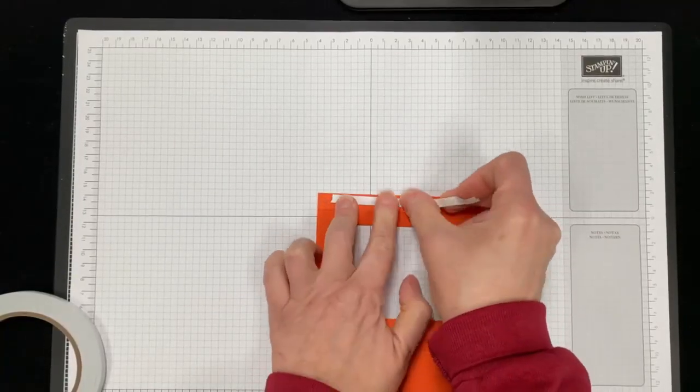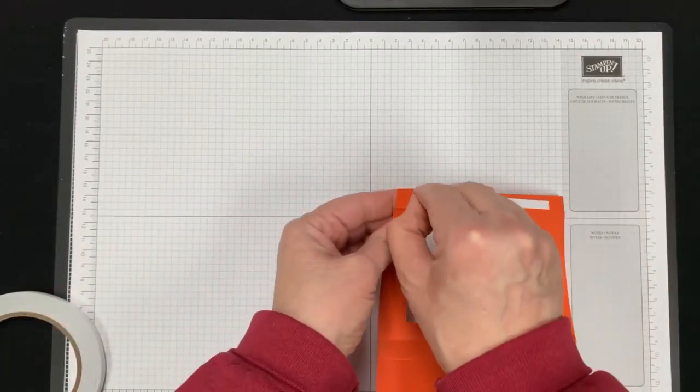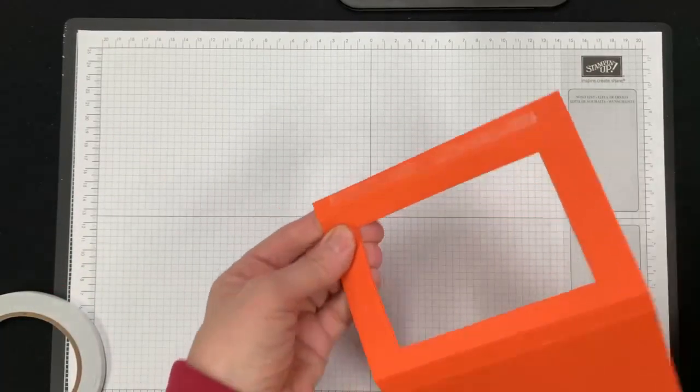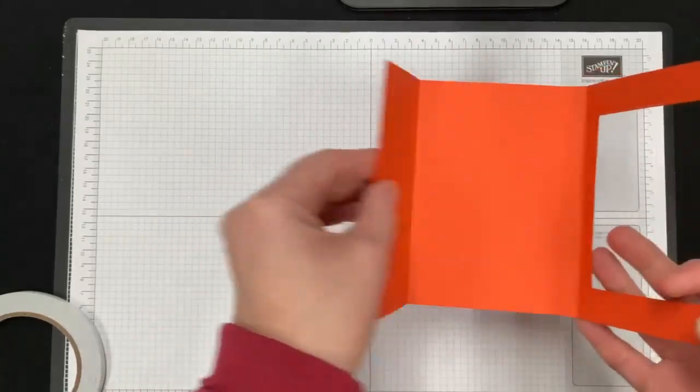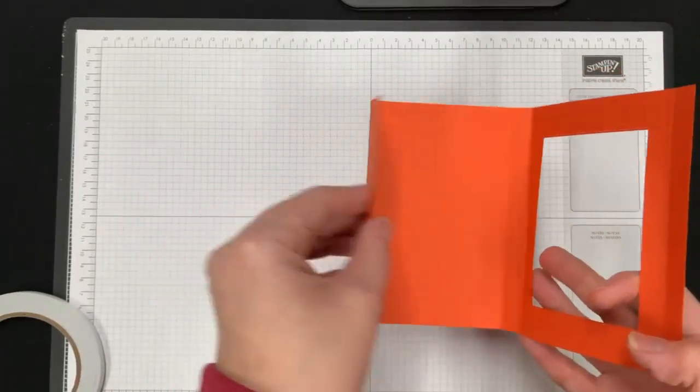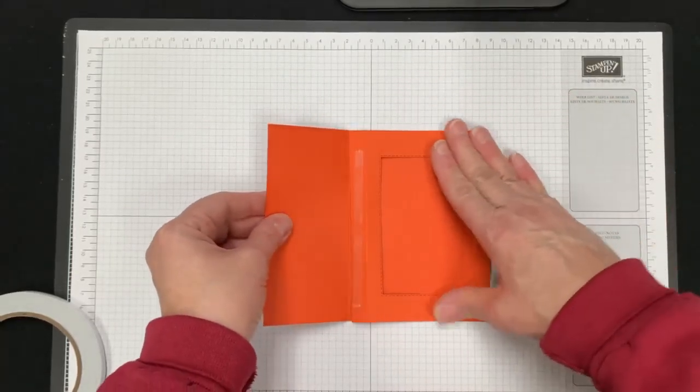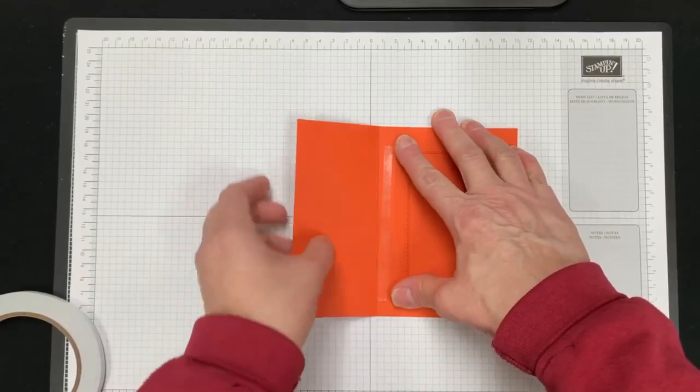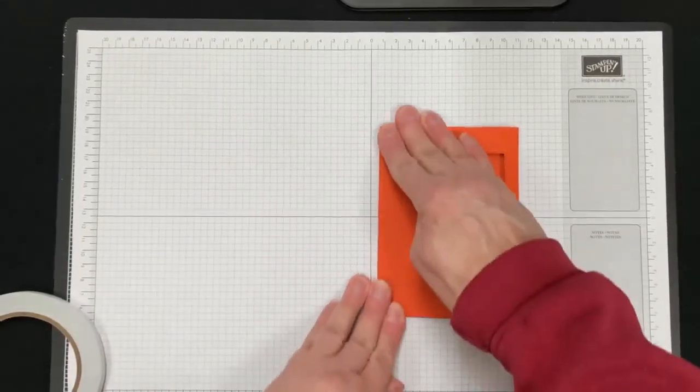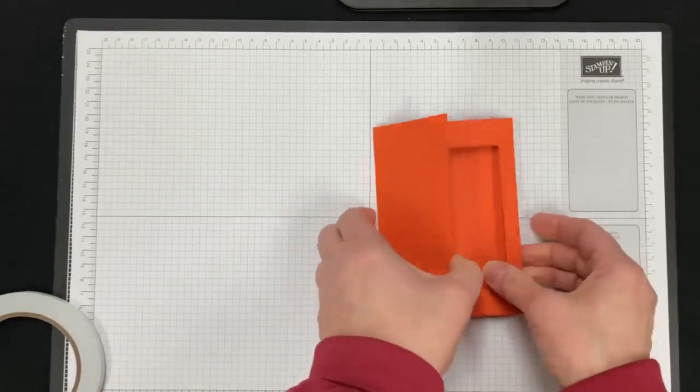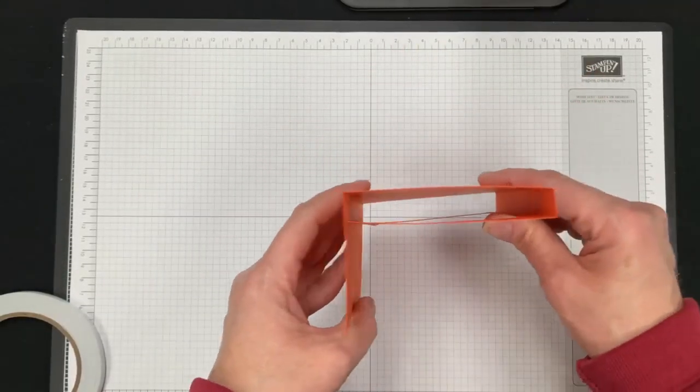I'm just going to put one right in the middle. Obviously I would cover the whole thing, but for time's sake we're just going to do this one piece. Peel this off. Now you don't have to worry about lining anything up. You leave your card open. This is your front flap. You fold it all down like this and you leave this open, and then you fold it like this.